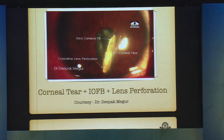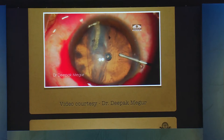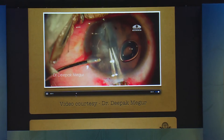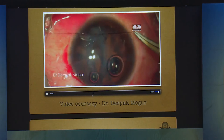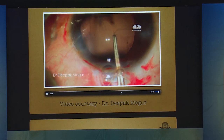This is a video by Dr. Deepak Magor showing a corneal tear with an intraocular foreign body and lens perforation. The incision should be opposite to the area of the tear or foreign body — rather than temporal, a 12 o'clock position allows the large foreign body to exit. He injected OVD, made a scleral tunnel, removed the IOFB, sutured the tear, aspirated the lens, converted the capsular edge into a continuous curvilinear capsulorhexis, enlarged it, and then implanted a multifocal IOL in the sulcus.